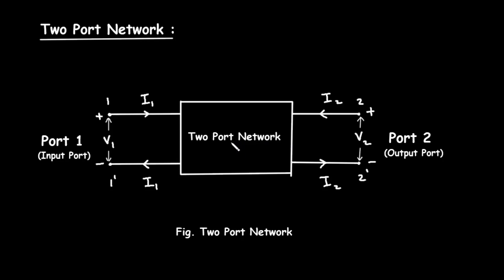What are the 2 port parameters? They are Z parameters or impedance parameters, Y parameters or admittance parameters, H parameters or hybrid parameters, and ABCD parameters or transmission parameters.